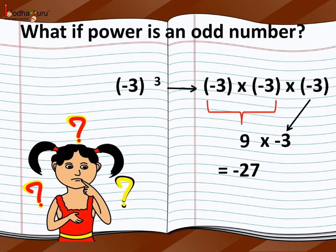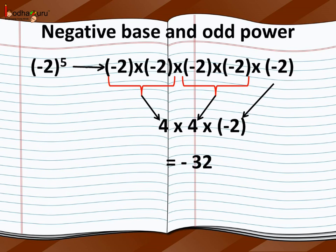And what if the power is odd, like in minus 3 to the power 3? It means minus 3 multiplied by minus 3 multiplied by minus 3. The product of two negative numbers is positive, so minus 3 into minus 3 is equal to 9. And the product of a positive and negative number is negative, so 9 multiplied by minus 3 is equal to minus 27. When the exponent of a negative base is odd, like in minus 2 to the power 5, the total multiplication can be grouped in 2 pairs, each consisting of minus 2 multiplied by minus 2, but one negative base would be left.